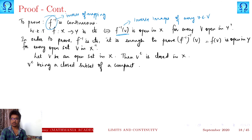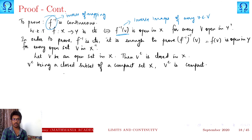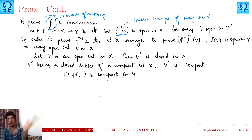Let V be an open set in X. If V is an open set in X, then V complement is closed in X. V complement, being a closed subset of the compact set X, is compact — because a closed subset of a compact set is compact.